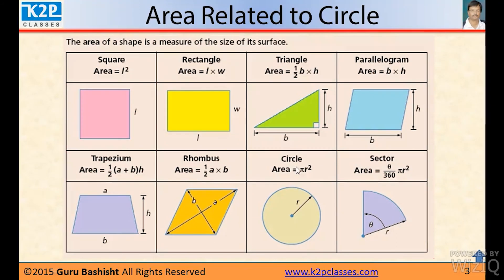Area of the circle is πr². Now, sector area: if this angle is θ, the total area is πr² and the total angle will be 360°. So for 360°, area is πr². So for 1°, πr²/360. So for a sector which makes angle θ, the area will be θ/360 × πr².